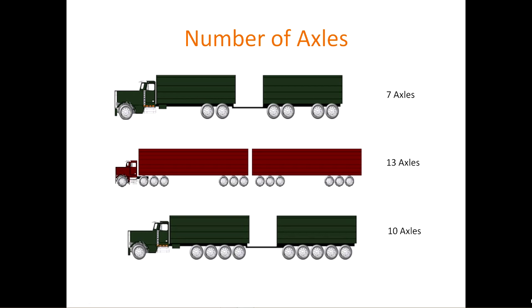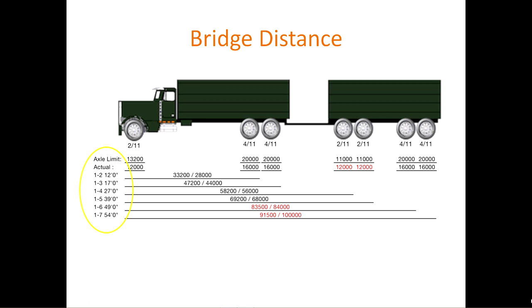The number of axles is the number of total axles on the vehicle or within the bridge. The bridge distance is the distance measured from the center of axle to center of axle.